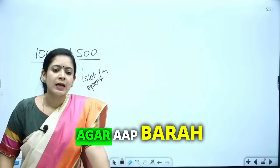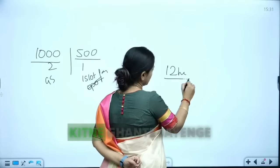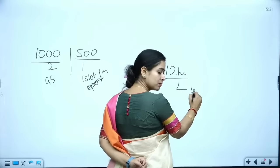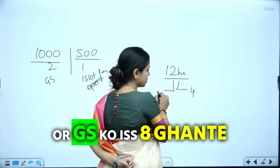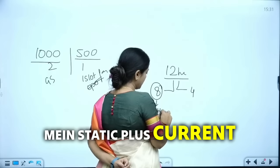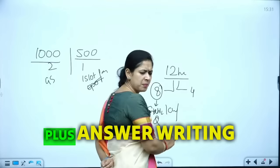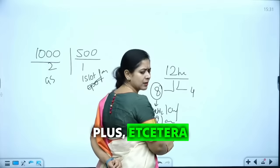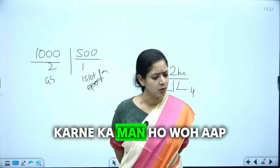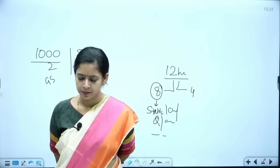If you are doing 2 to 1, 2 to 1, 2 to 1, or 3 to 1, if you are doing 2 to 1, 3 to 1, you can do it in simple terms.